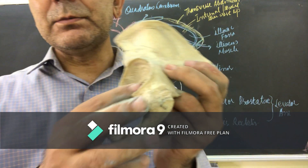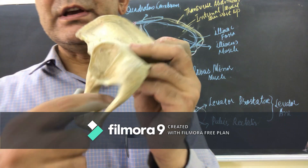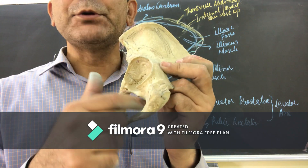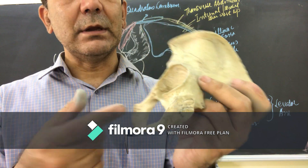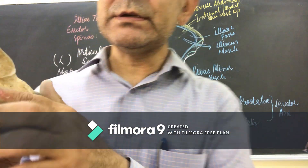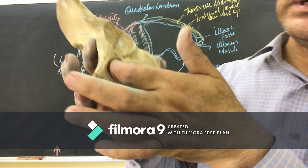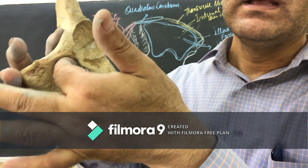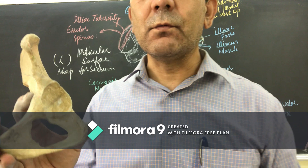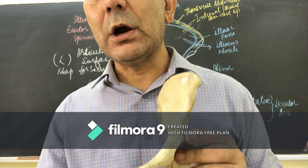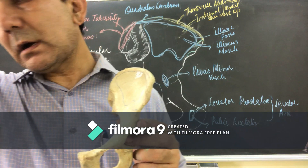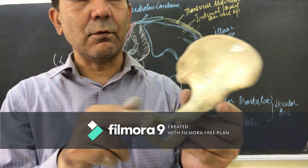Just below the acetabulum notch is a foramen called the obturator foramen. At the pubic surface, there is a groove called the obturator groove, through which the obturator nerve and obturator arteries pass.